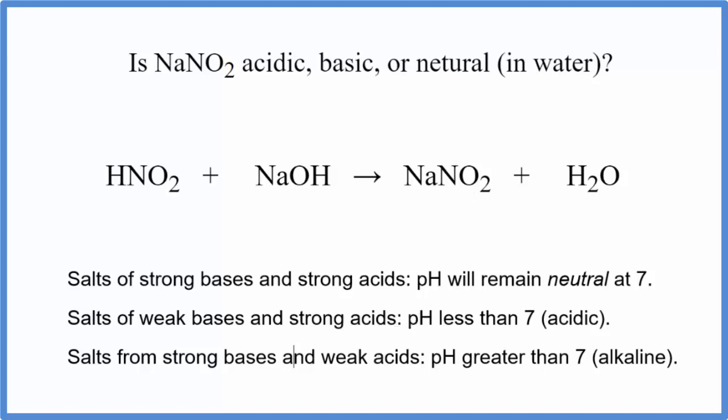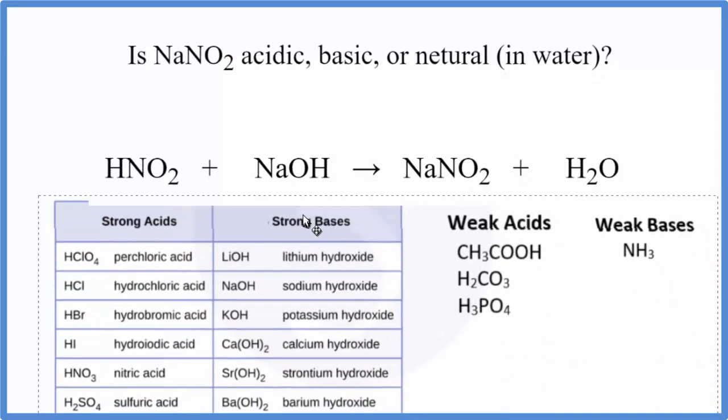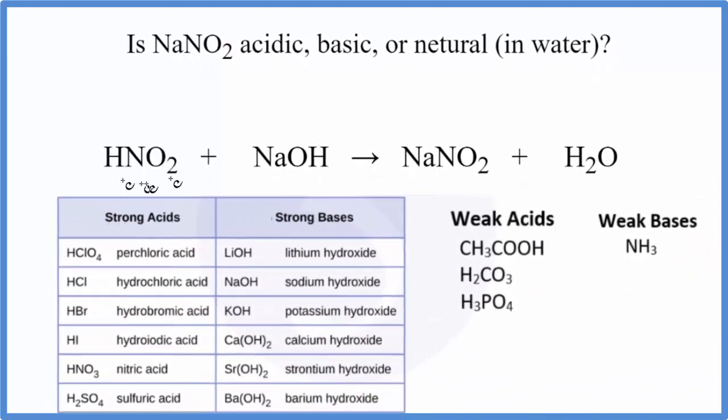We can use this table here to help us out. So on the table, HNO2, we're looking to see whether it's a strong acid. And as we go down, HNO3, but HNO2 is not listed for our strong acids. So we're going to assume that HNO2 is a weak acid. I'm going to put WA up here.